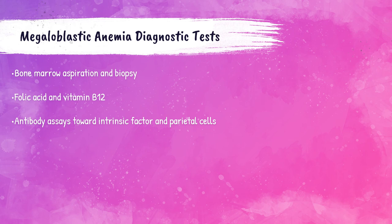The physician will run a complete blood count and complete metabolic panel, then confirm the diagnosis with a folate and vitamin B12 level on the patient's blood — tests run in the clinical chemistry department. There are also antibody assays towards intrinsic factor and parietal cells to check for issues with intrinsic factor production. A bone marrow aspiration and biopsy can also be performed to confirm the diagnosis.